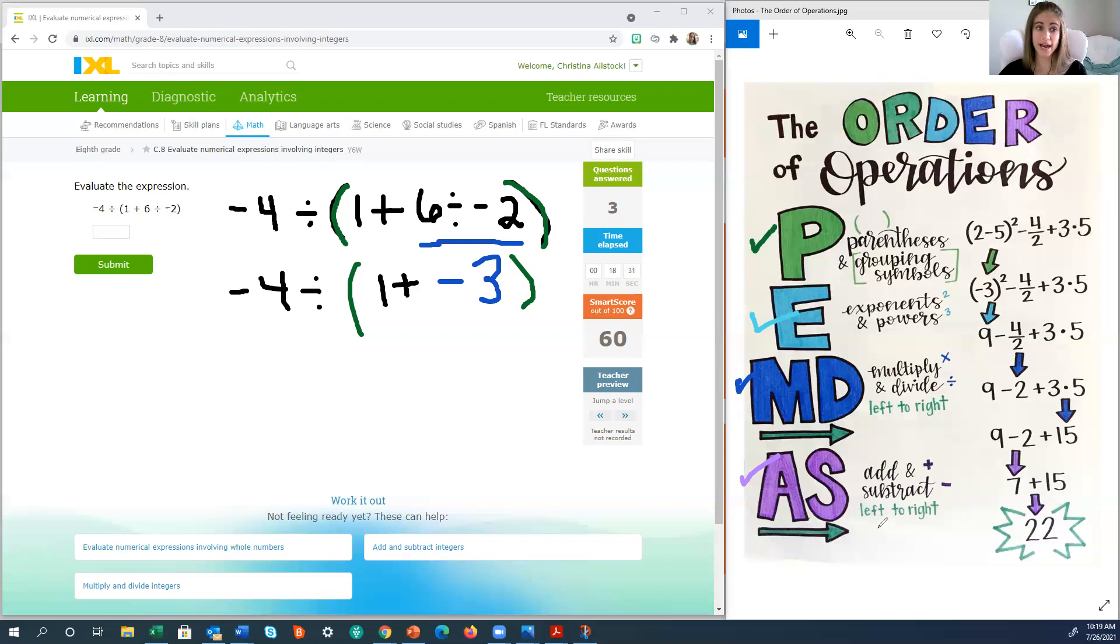So in this case, we have different signs. So we have a positive 1 and a negative 3. We're going to subtract our numbers. 3 minus 1 is 2 and then our answer has the sign of the larger number. Is 1 larger or is 3 larger? 3 is larger and 3 is negative. Therefore, our answer is negative 2. Alright. And at this point, we only have a single number. So do I need the parentheses? Nope. I can just drop them.